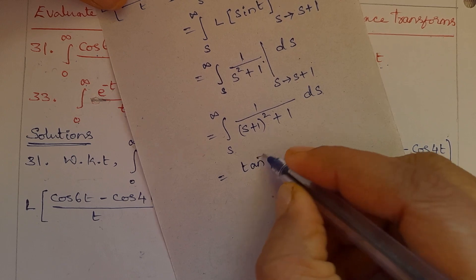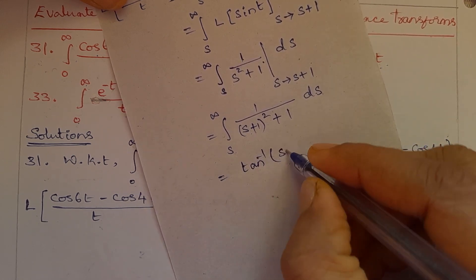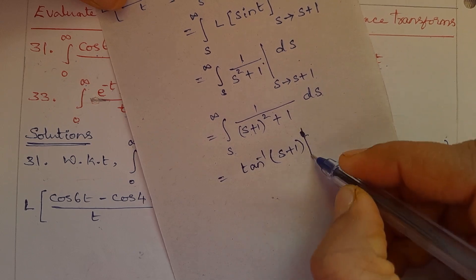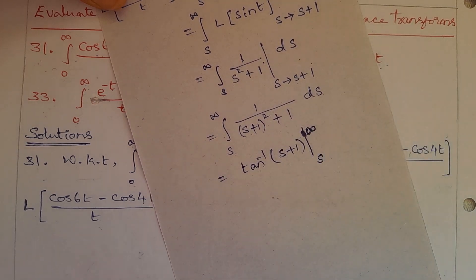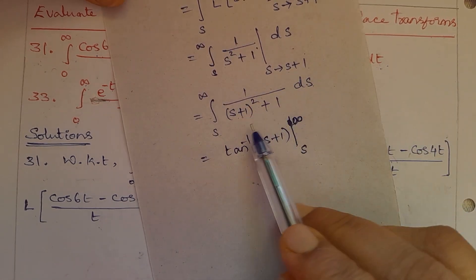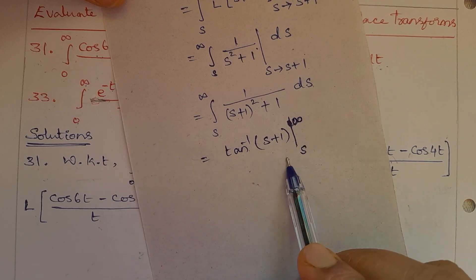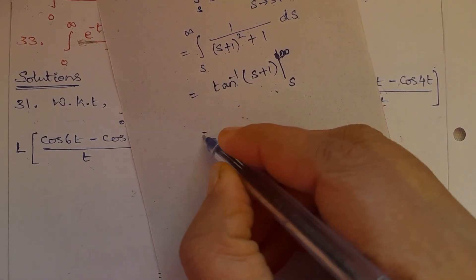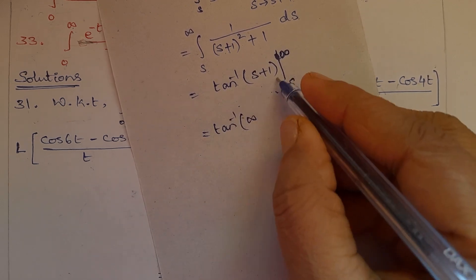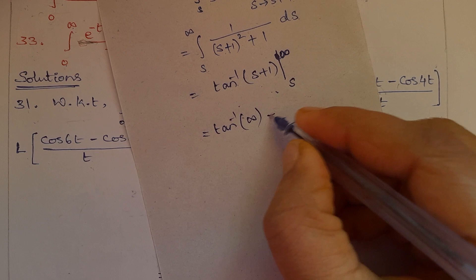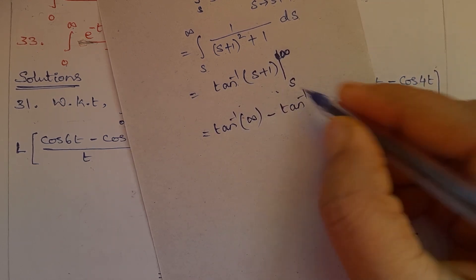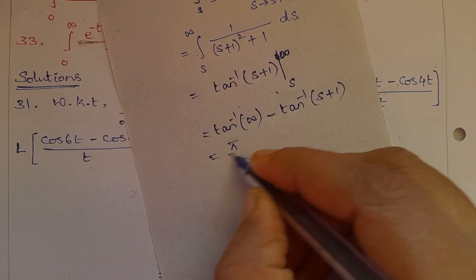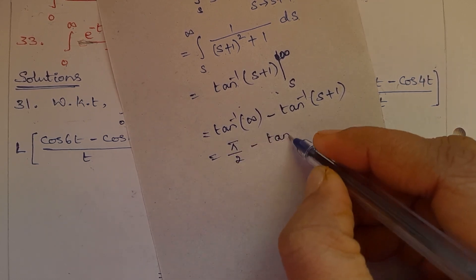So applying that formula, we get tan inverse of (s+1), with limits s to infinity. Applying the upper limit: tan inverse of infinity plus 1 is tan inverse of infinity. The lower limit is tan inverse of (s+1). Tan inverse of infinity equals 90 degrees or pi by 2 radians. So the result is pi/2 minus tan inverse of (s+1).